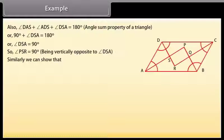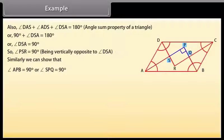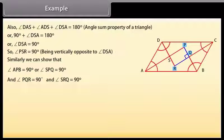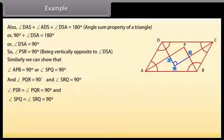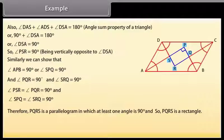Similarly, angle APB = 90 degrees (so angle SPQ = 90 degrees), angle PQR = 90 degrees, and angle SRQ = 90 degrees. We can see that angle PSR = angle PQR = 90 degrees and angle SPQ = angle SRQ = 90 degrees. Therefore PQRS is a parallelogram in which at least one angle is 90 degrees, so PQRS is a rectangle.